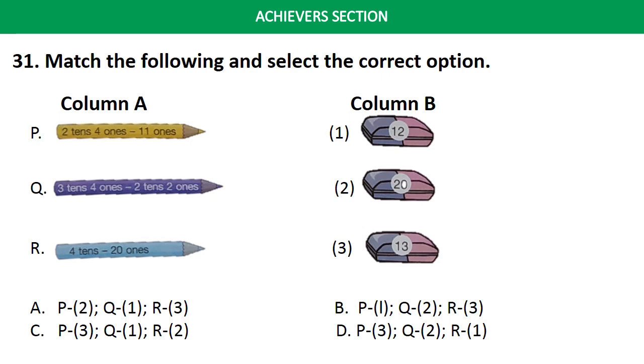Now questions from Achievers section. Each question in Achievers section carries 2 marks. Question No. 31. Match the following and select the correct option. Please look at Column A and Column B carefully. Answer is Option C. That is P3, Q1, R2.